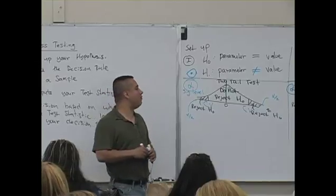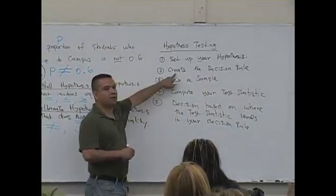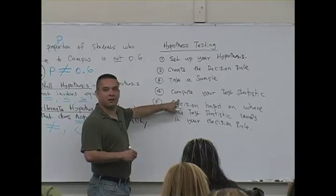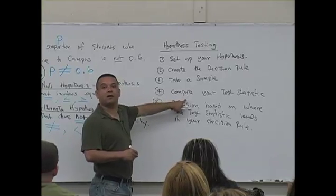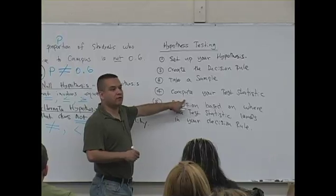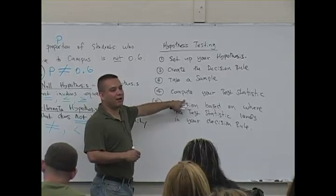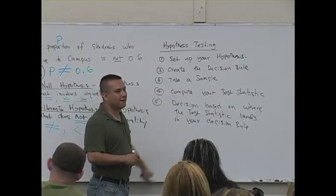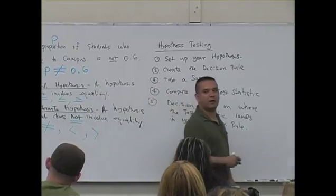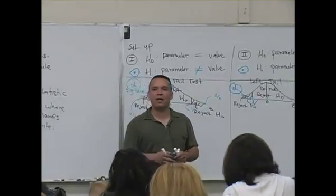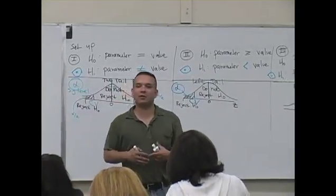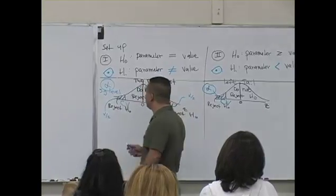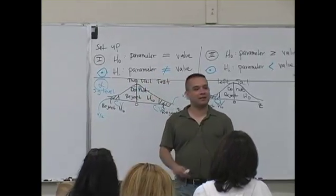Next, you take a sample and compute a test statistic — it's just a formula based on your sample. You plug everything in and calculate. From experience, most people do fairly well with computing the test statistic. Interestingly, more errors tend to occur with critical values than with computing test statistics — which is why so much emphasis was placed on getting critical values right.